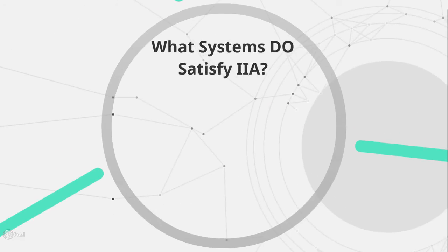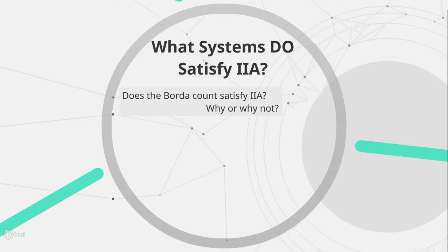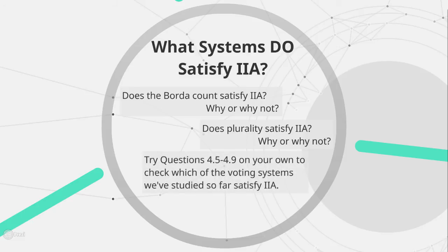In general, a lot of the systems that we've looked at unfortunately may not satisfy IIA. So I'd like you guys to work on your own — there are nice examples in the book to help you through this. See whether or not the Borda count satisfies this independence of irrelevant alternatives criterion. See if plurality satisfies it. A good way to prove that one of these systems does not satisfy it is if you can come up with an election, or cite a historical election, where IIA was probably violated. There's a nice walkthrough in those four or five questions in our text, where you can check which of the voting systems we've looked at so far have satisfied it, including sequential pairwise voting and a few other systems.